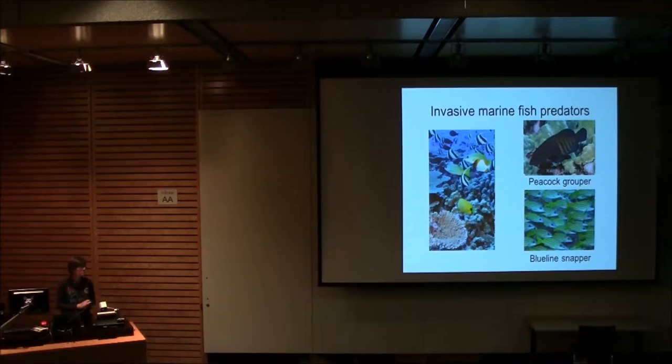Lionfish, as you'll find out soon, are also predators. So if we narrow this down onto predatory fish, then the list of precedents to lionfish becomes even smaller. In fact, it's limited to probably fewer fingers than I have on my hand. And three of these species are found in Hawaii. So the peacock grouper and blue line snapper, and there's another snapper that's not depicted here.